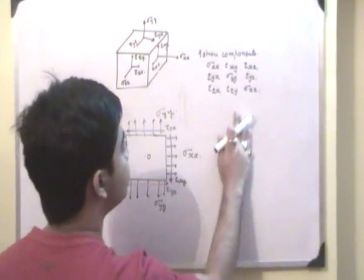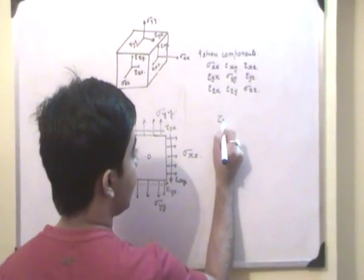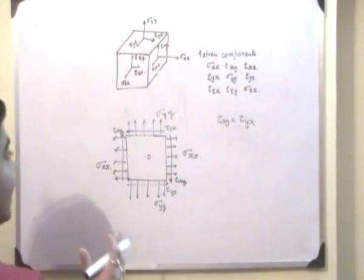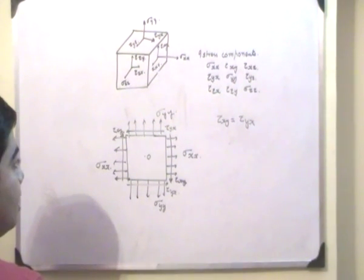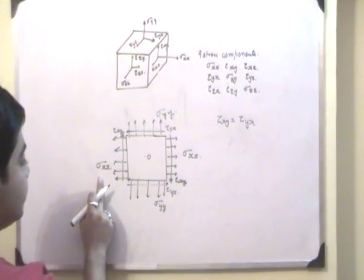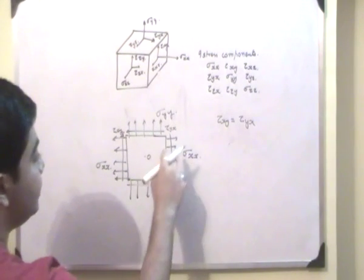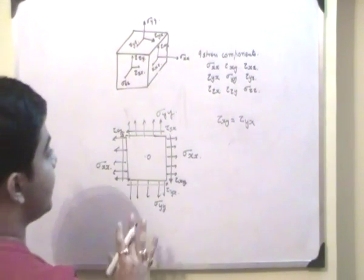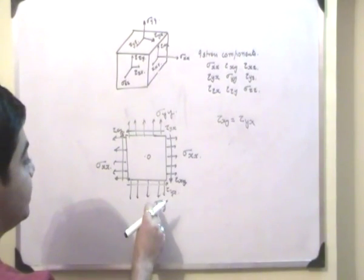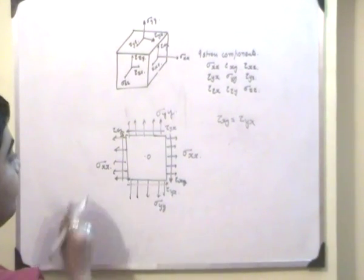Now, let us prove that tau xy will be equal to tau yx. As this thing is in equilibrium, every force will balance each other. Sigma xx balances this. Sigma yy is balanced. Tau xy is balanced. Tau yx is balanced. But there will be a couple that tau yx will create and tau xy will create.